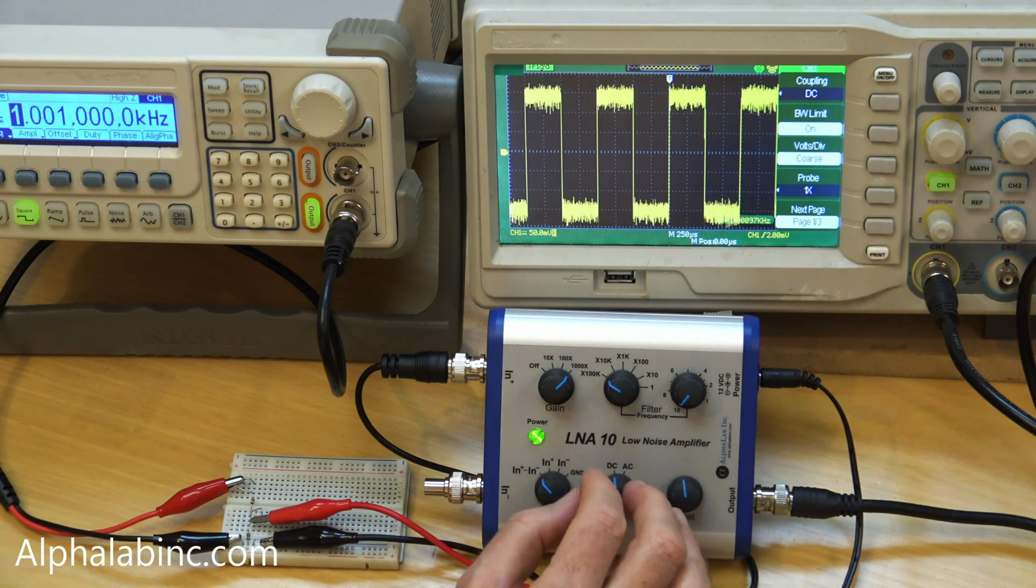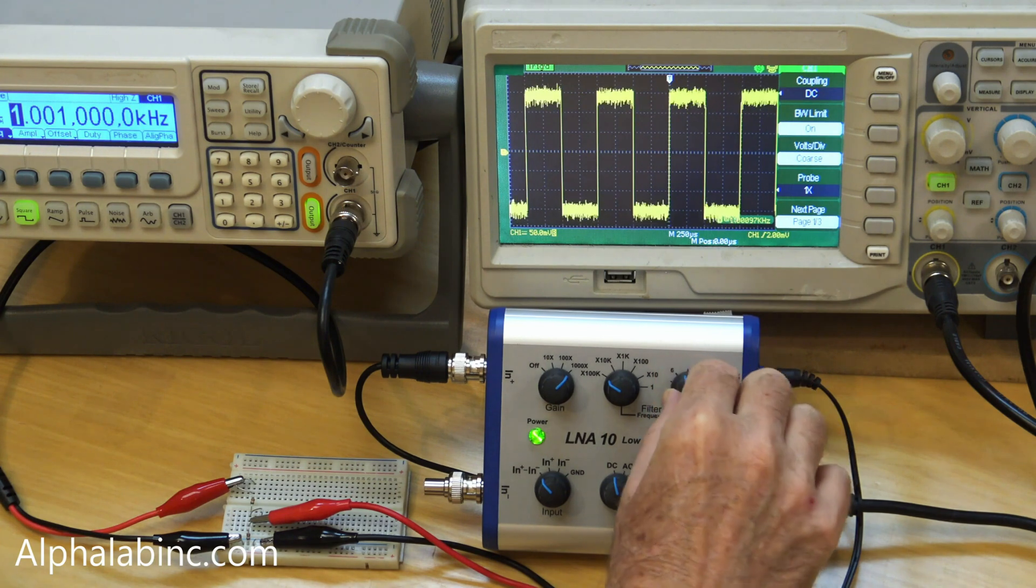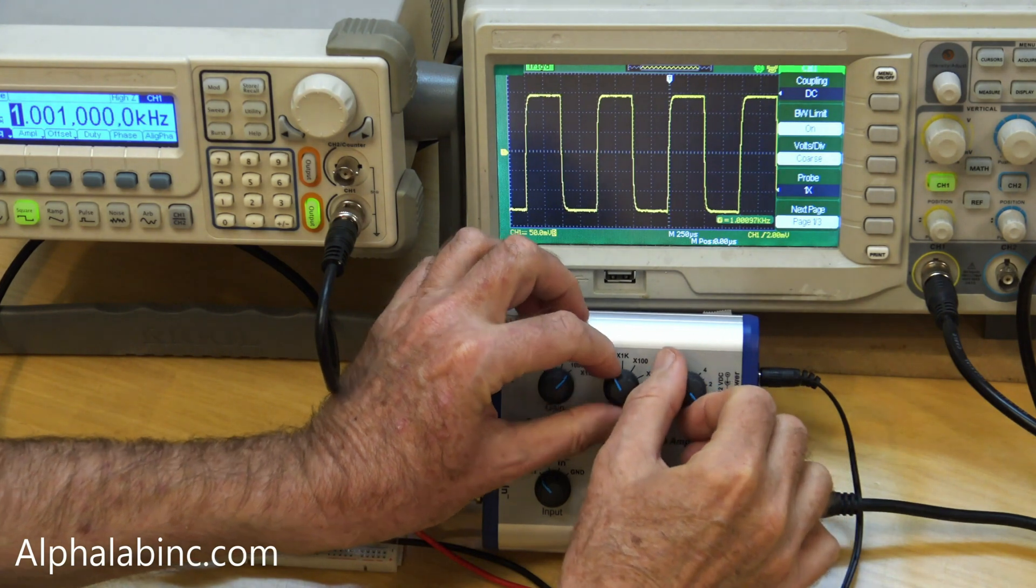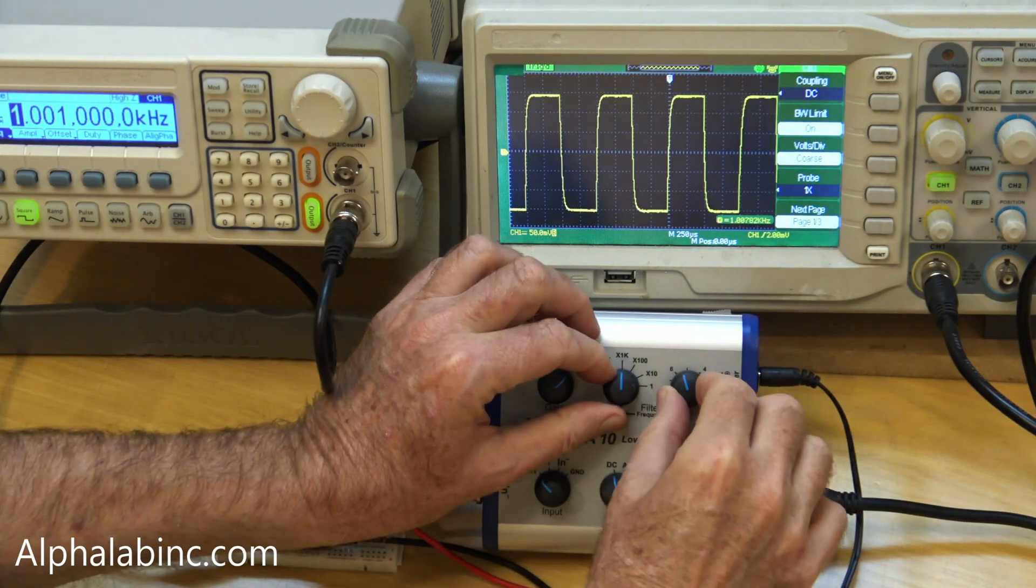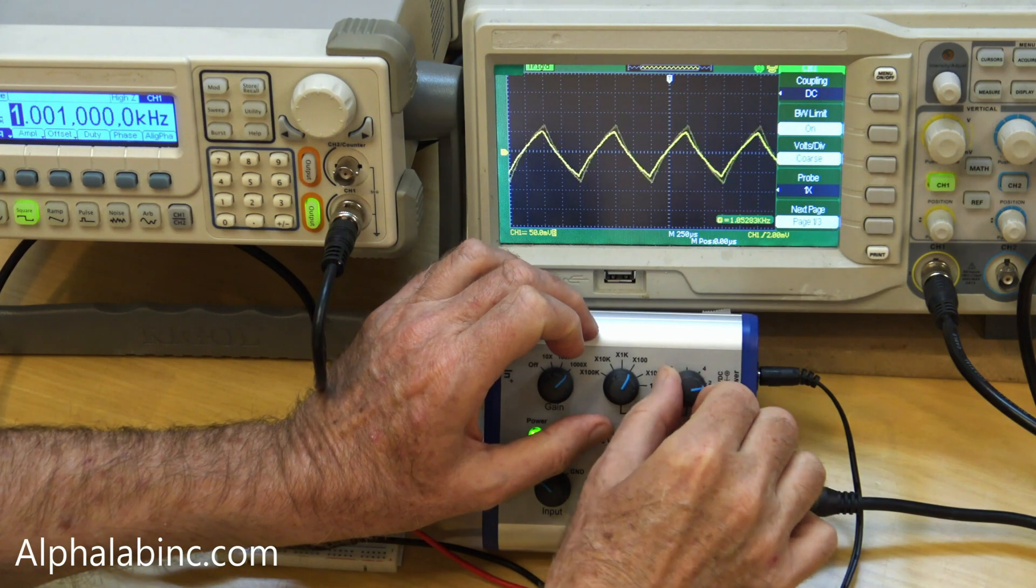Looking at a 1 kilohertz square wave, here is 1 megahertz to 100 kilohertz, 100 kilohertz to 10 kilohertz, 10 kilohertz to 1 kilohertz, 1 kilohertz to 100 hertz.